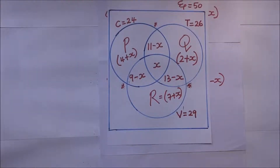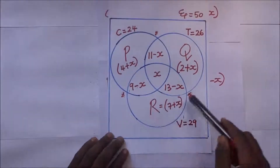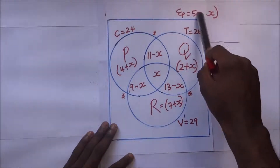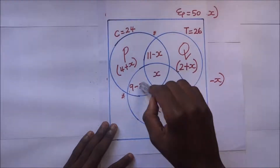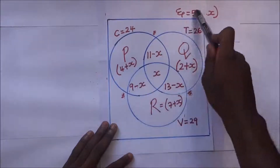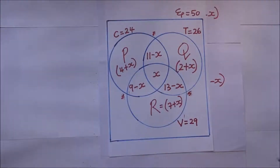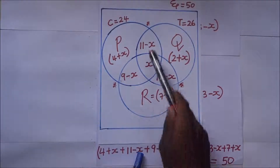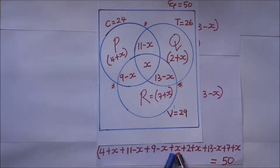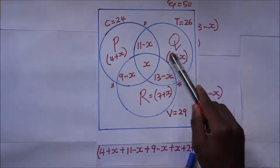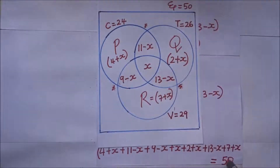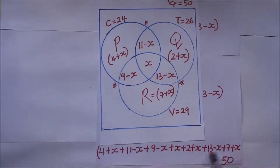With all regions now expressed in terms of x, and since all 50 students play at least one game, we add all regions and set them equal to 50. Adding: (4 + x) + (11 − x) + (9 − x) + x + (2 + x) + (13 − x) + (7 + x) = 50. This simplifies to 46 + x = 50.